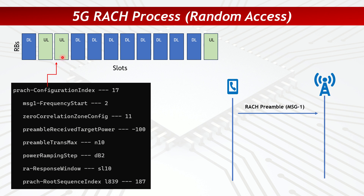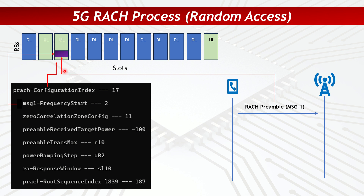Within that slot, the UE also needs to know where in frequency to send the preamble. This comes from the Message 1 frequency start parameter, which gives the exact starting frequency in terms of resource blocks. For example, the second resource block is where the preamble transmission starts. Using all these parameters together, the UE now knows exactly where in time and frequency to send the RACH preamble Message 1.